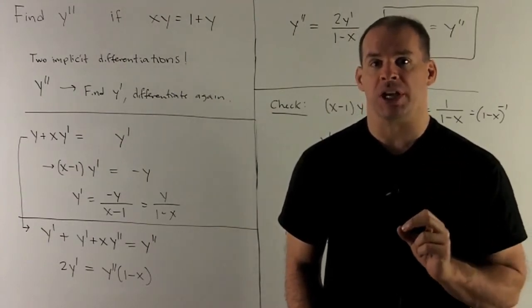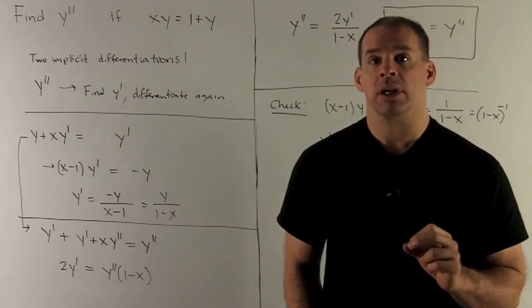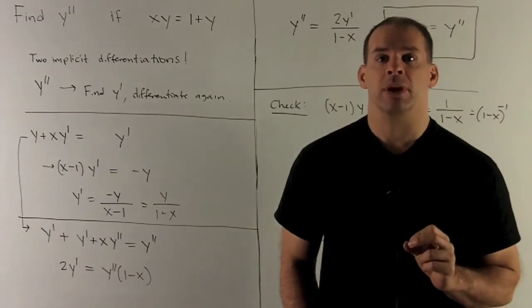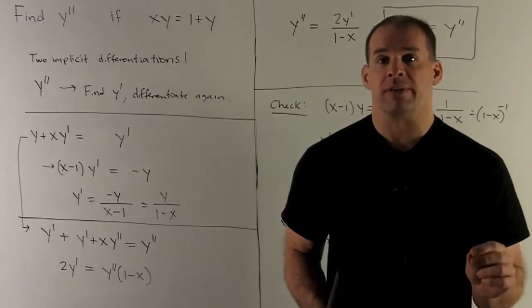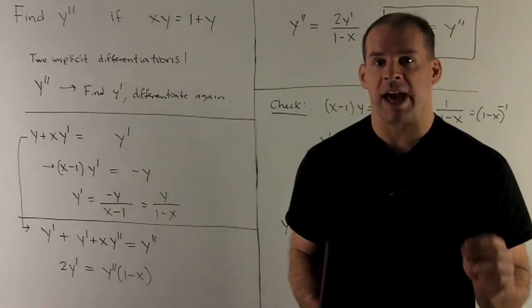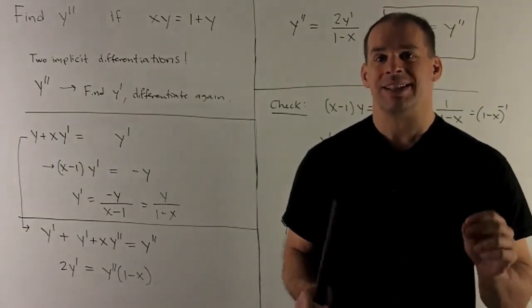We're going to need to use implicit differentiation twice. Let's review our procedure. For implicit differentiation, I'm going to have an equation. If I take the derivative on each side of the equation with respect to x, then what comes out stays equal.